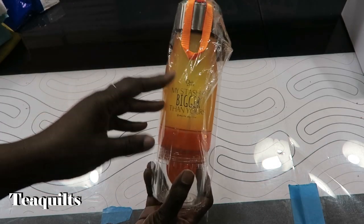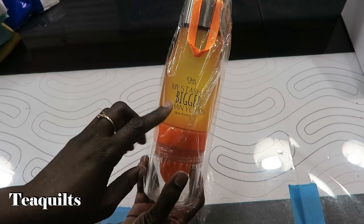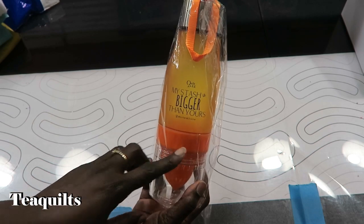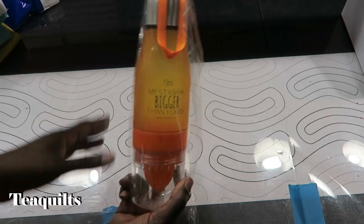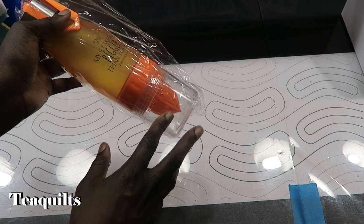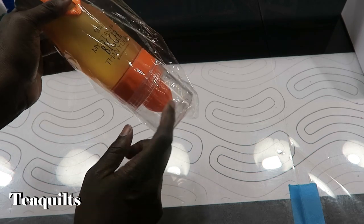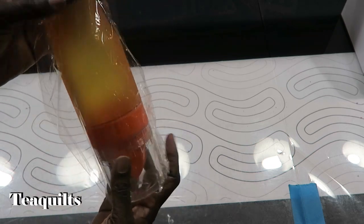Next up, we had Quilt Easy. They were handing out 'My Stash is Bigger Than Yours' drinking cups where you can put your fruits or like your lemon and limes in the bottom in your water.